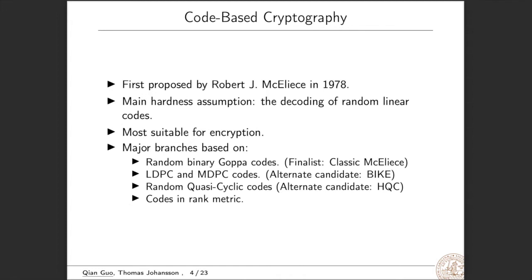The first code-based cryptosystem was proposed by McEliece in 1978 using random binary Goppa codes. Later we have many different constructions, but the main hardness assumption of code-based crypto is the decoding of random linear codes, a very famous NP-hard problem in the worst case.